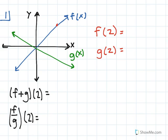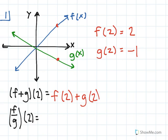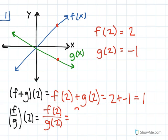Looking at our graph, f of 2 is approximately 2, and g of 2 is approximately negative 1. So f plus g of 2 can be treated as f of 2 plus g of 2, which is 2 plus negative 1, which equals positive 1. And then f over g of 2 can be treated as f of 2 divided by g of 2, or 2 divided by negative 1, which gives us an answer of negative 2.